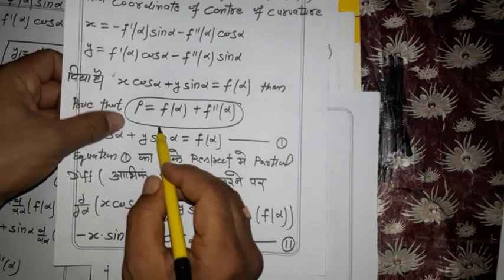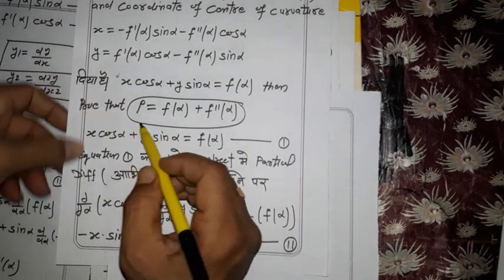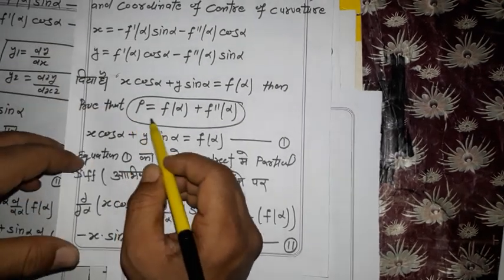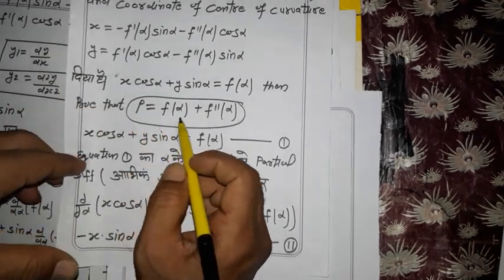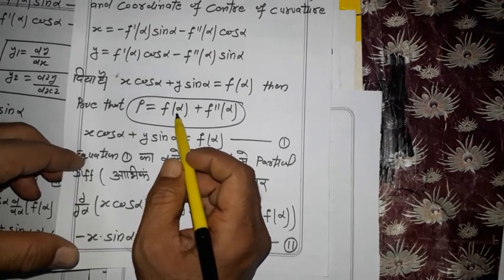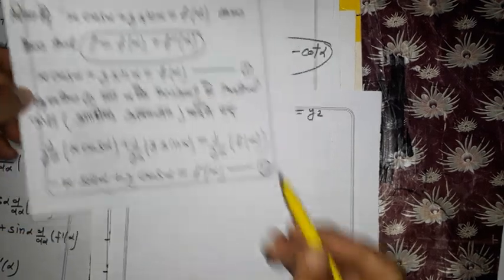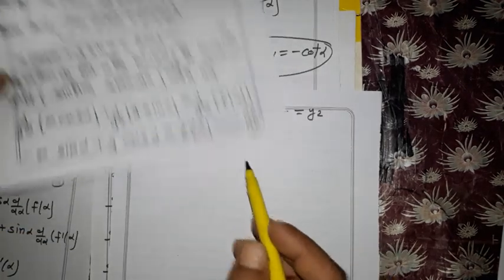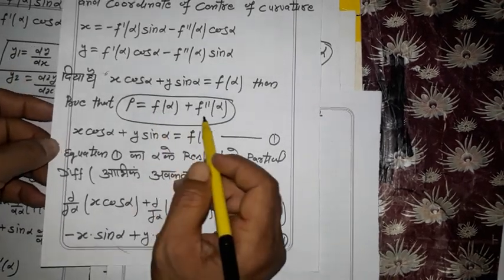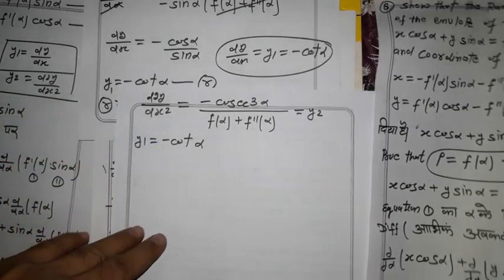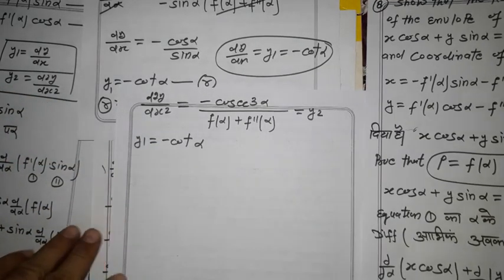Now we need to prove that the radius of curvature ρ equals f(α) + f''(α). Let's substitute y₁ and y₂ into the formula ρ = (1 + y₁²)^(3/2) / y₂.